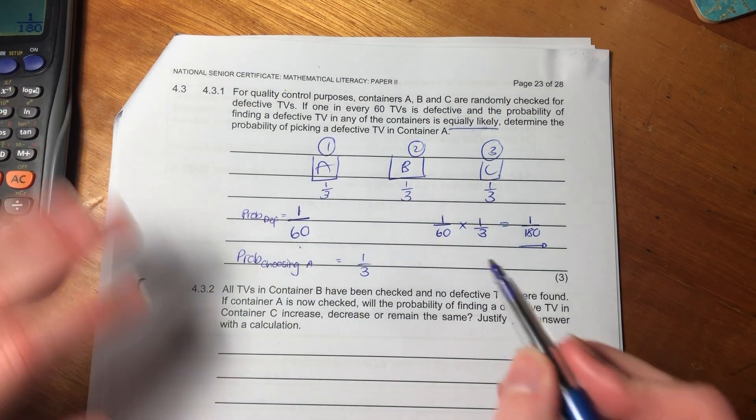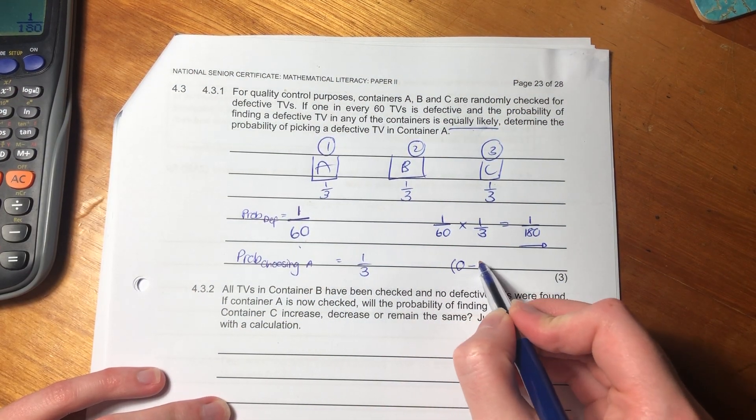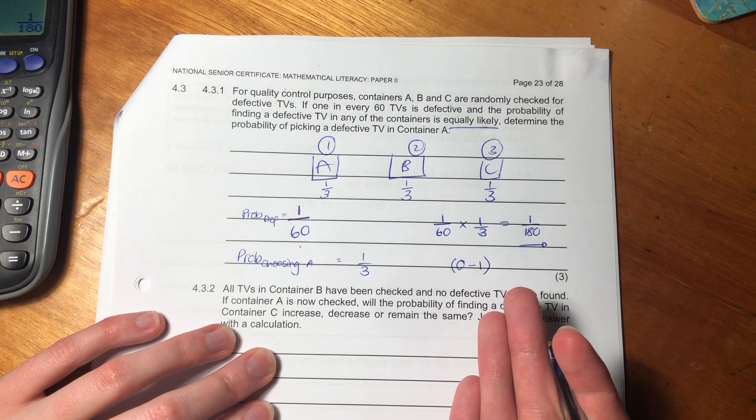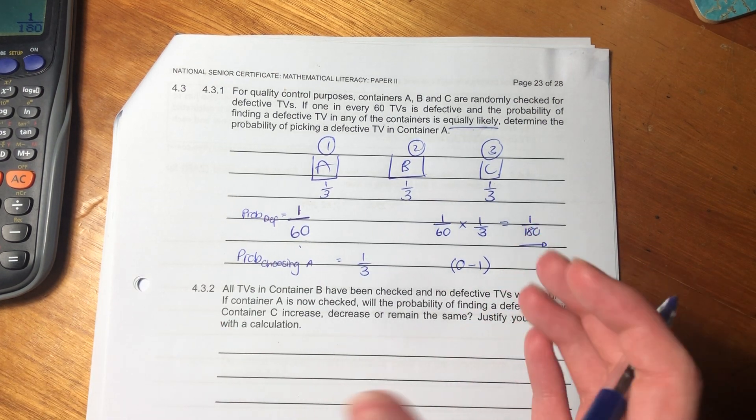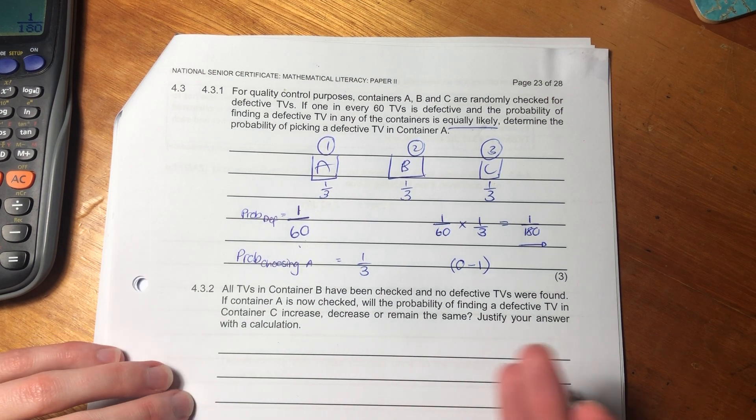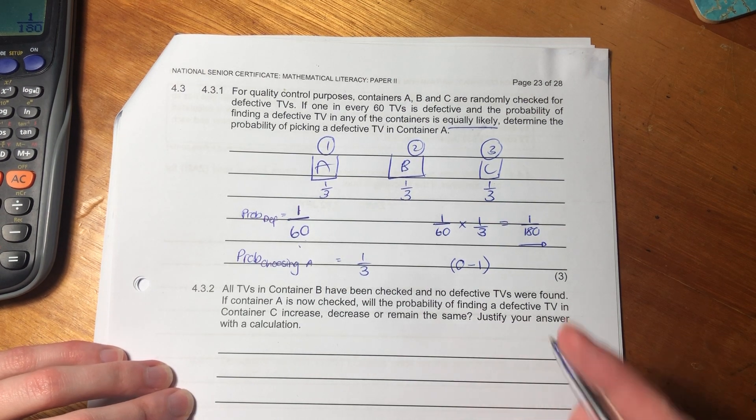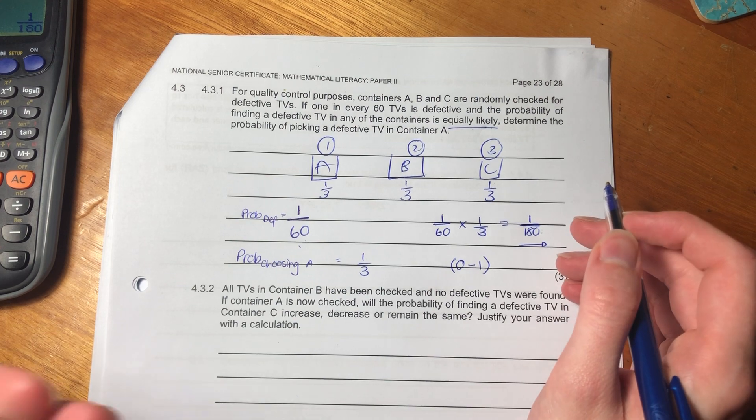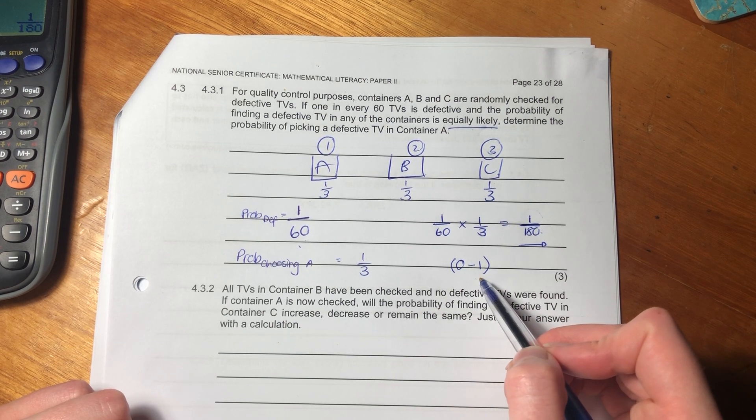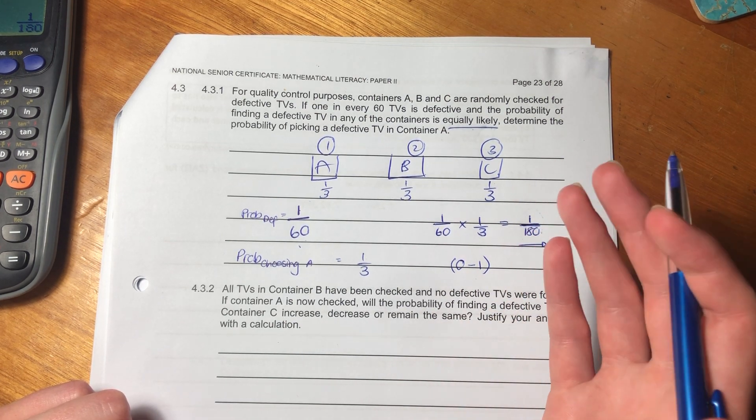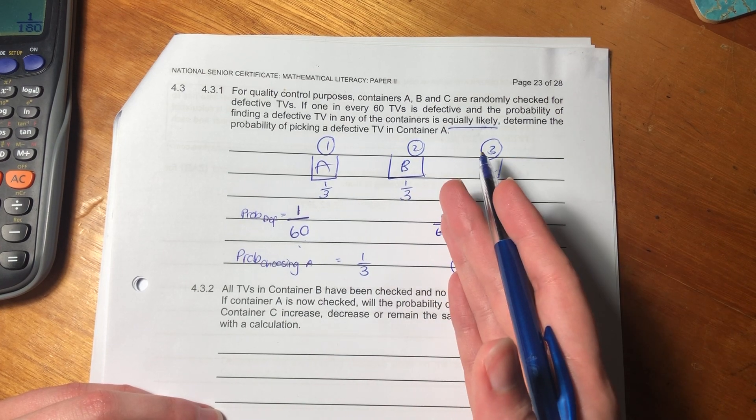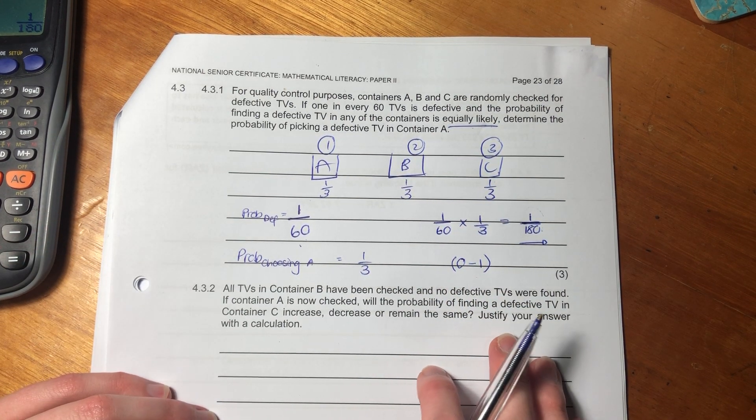So we times the probability of defective, times by the probability of choosing container A. So we'll put that into our calculator. Just make sure you type it in correctly, guys. You really don't want to be losing marks for that. So it's one over 180. So you can put this into a decimal form if you want, but it's like kind of a weird one to write out because it's really small. And remember with probability, when you're talking about probability, it should always be between zero and one. The probability of zero means it will never happen. And the probability of one means it definitely will happen. You can't be getting a negative probability or probability of greater than one.